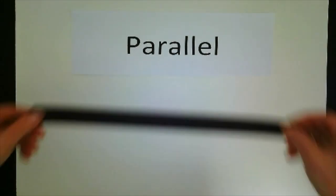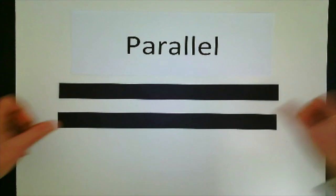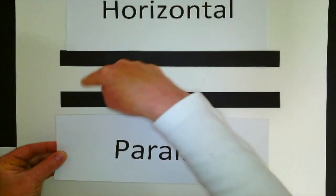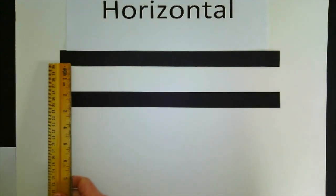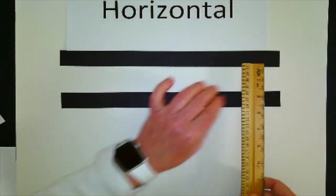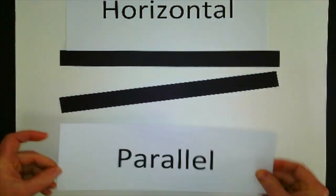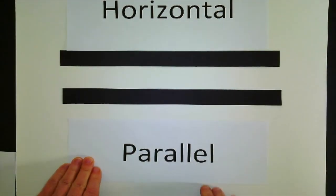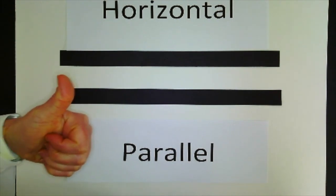I can have parallel lines by having two lines equal distance from each other. These are two horizontal lines. They are parallel. They are the same distance from one side to the other side. If they're not the same distance, they are not parallel. Parallel means equal distance.